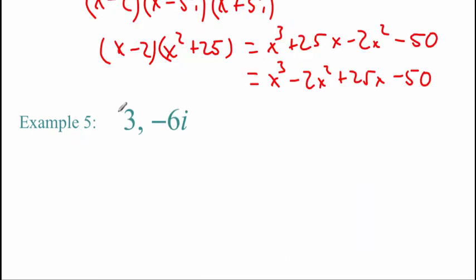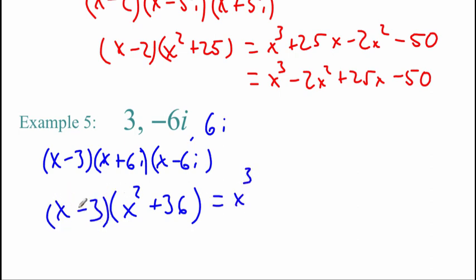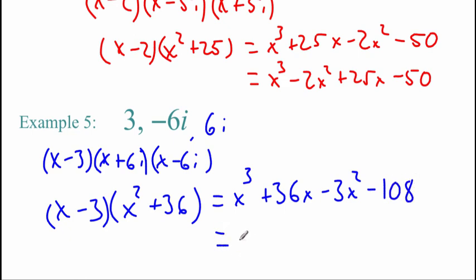In the next example, the zeros are 3, negative 6i, and its conjugate pair positive 6i. The factors are x minus 3, x plus 6i, and x minus 6i. Multiplying x plus 6i times x minus 6i gives x squared plus 36. FOILing with x minus 3: x cubed plus 36x minus 3x squared minus 108. Rearranging in descending order: x cubed minus 3x squared plus 36x minus 108.